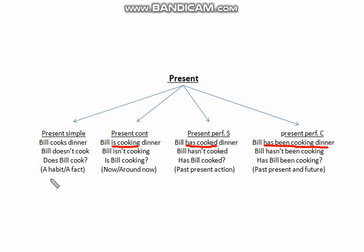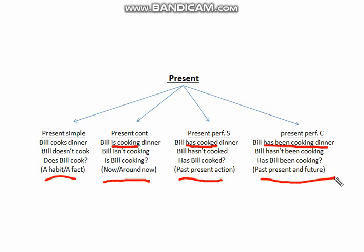Now let's move on to the meaning of these tenses. For the present simple, we use it for a habit or a fact — for example, 'Bill cooks dinner' is a habit, and 'The sun rises from the east' is a fact. The present continuous describes an action happening now or around now. The present perfect simple is an action that started and finished in the past but connects to the present — like 'Bill has cooked.' The present perfect continuous, 'Bill has been cooking,' means the action started in the past and is still ongoing, extending into the future.